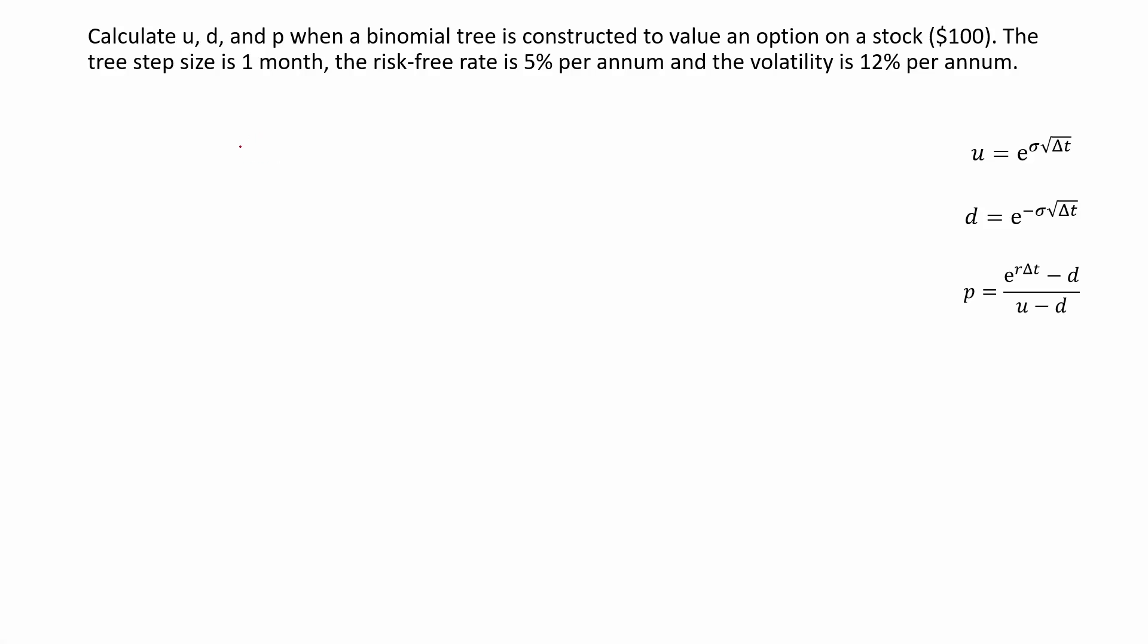Let's look at how to construct a binomial tree when we're given the volatility. The question reads: calculate u, d, and p when a binomial tree is constructed to value an option on a stock which is currently valued at $100. The tree step size is one month, the risk-free rate is 5% per year, and the volatility is 12% per year.